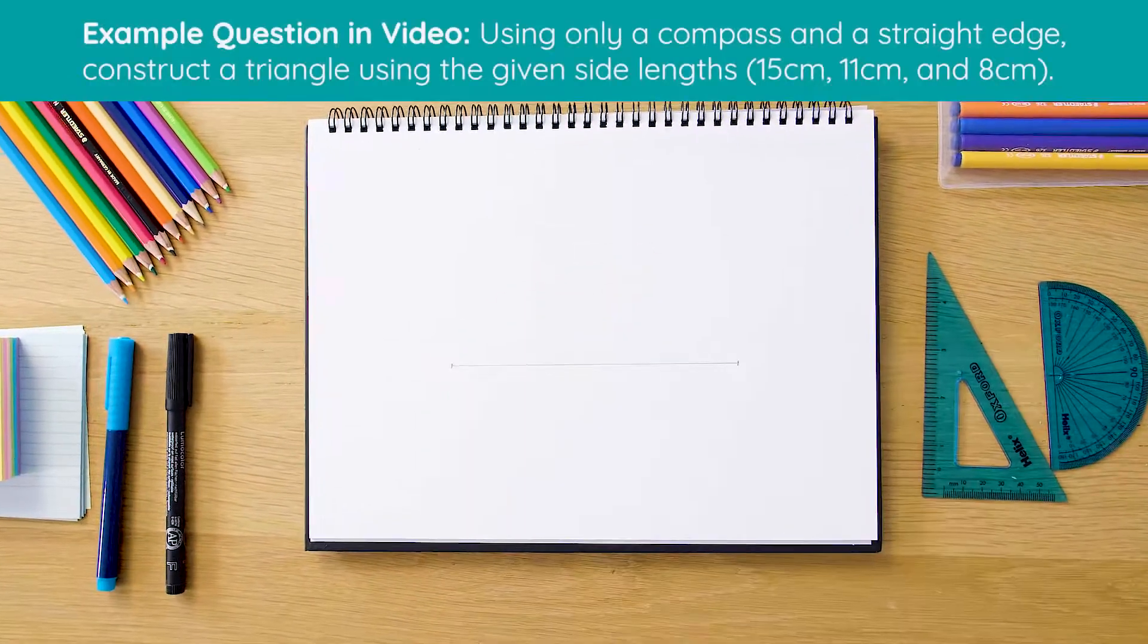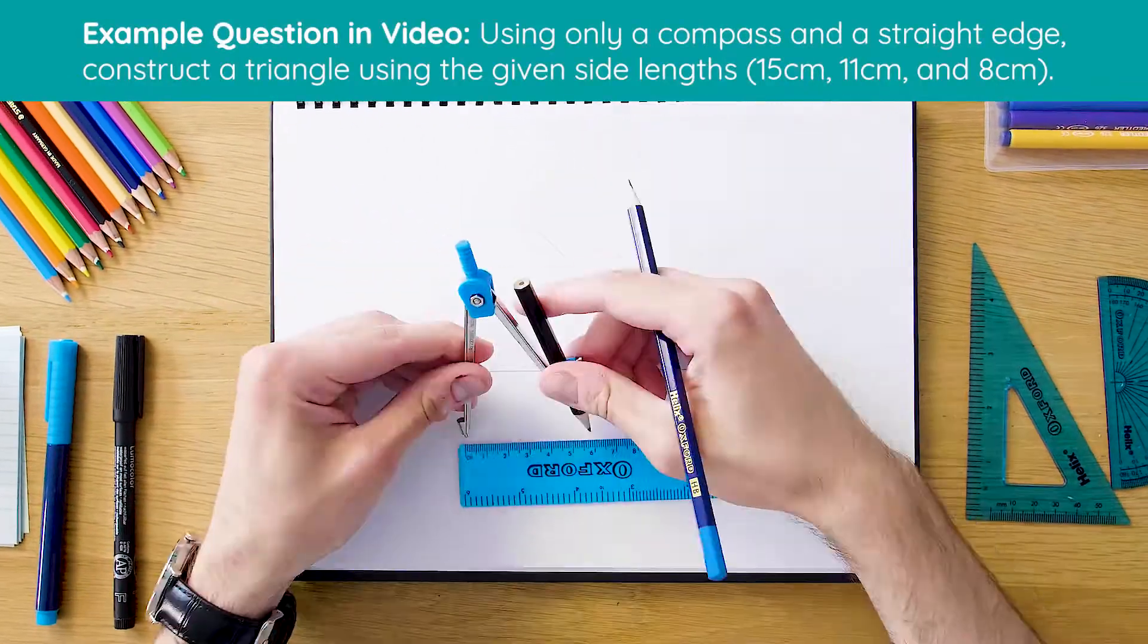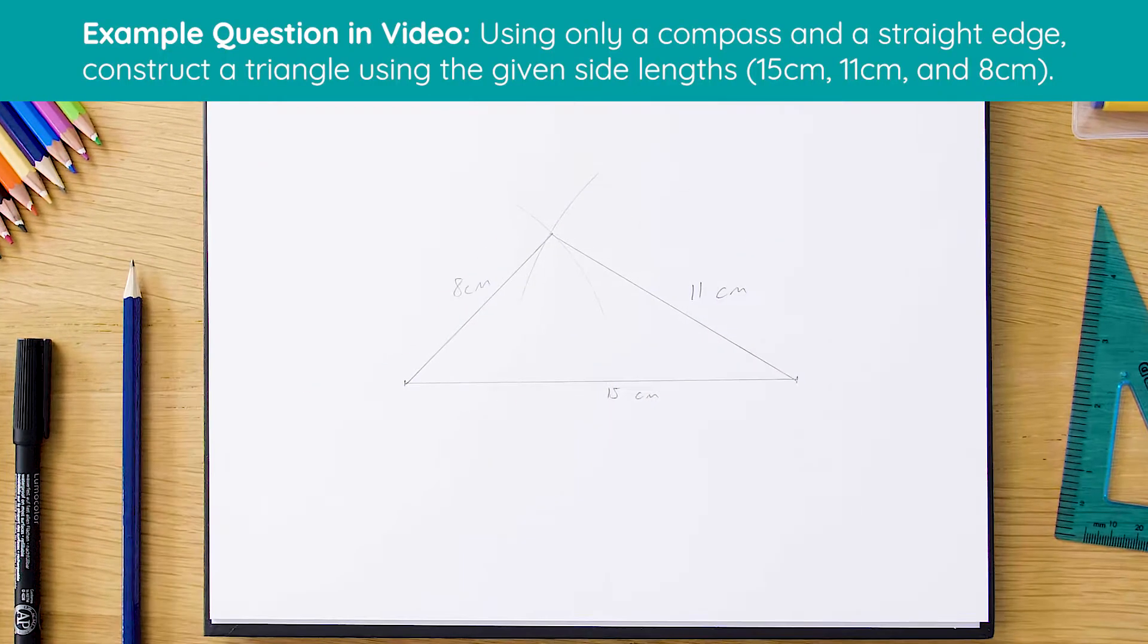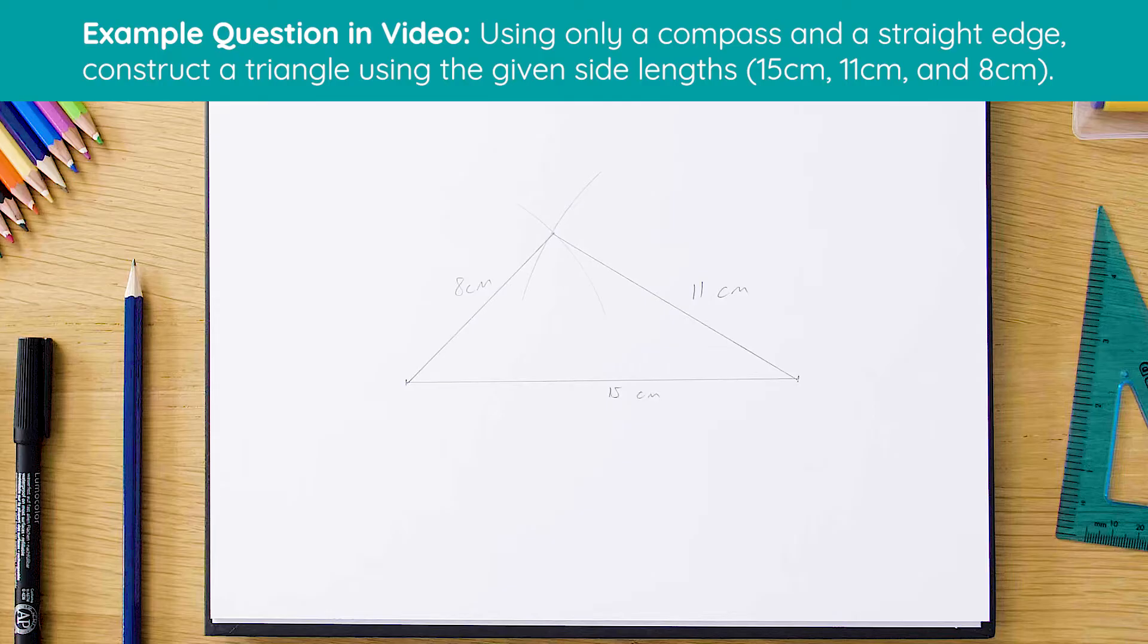Okay, so here's our finished triangle. As you can see, we've got our 15 centimeter line which is horizontal, and then we've swung our arcs of 11 and 8 centimeters which met somewhere above the triangle. So let's just see how this is done now from scratch.